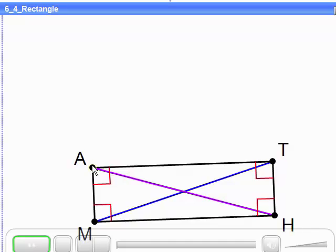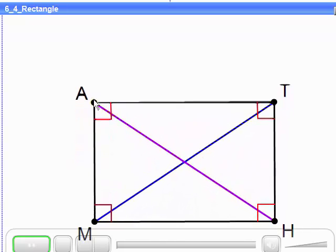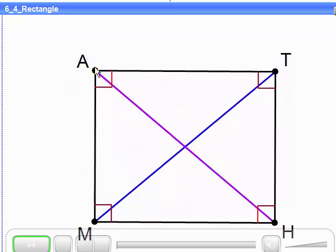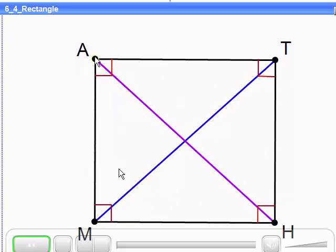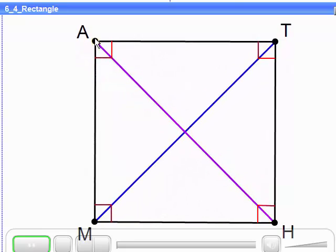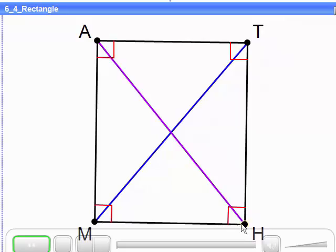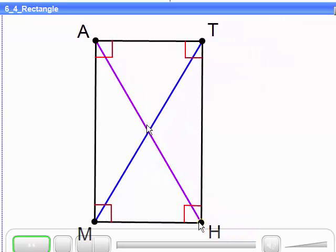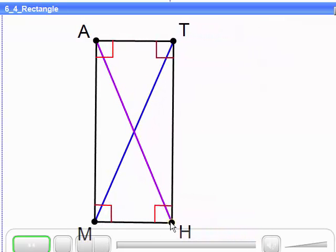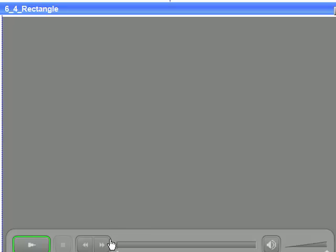So as that point is dragged around, it's always maintaining the properties of a rectangle. Now you see as it becomes a square, see there's your right angle there on the perpendiculars, on the diagonals. Let's see now, see those diagonals are no longer intersecting at a right angle, because the sides aren't congruent.